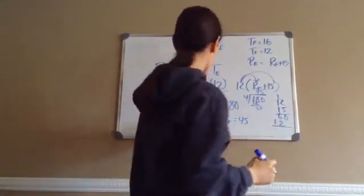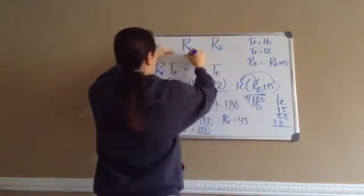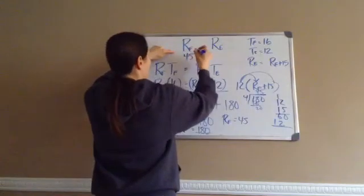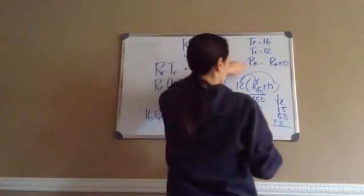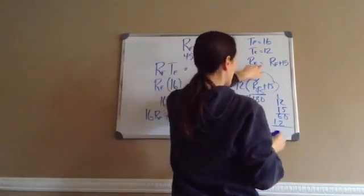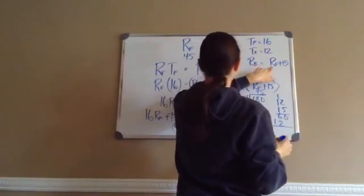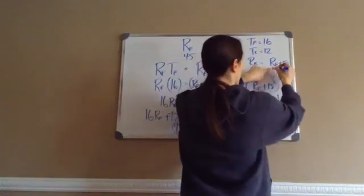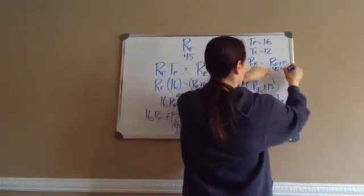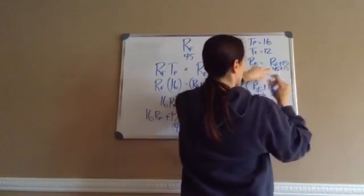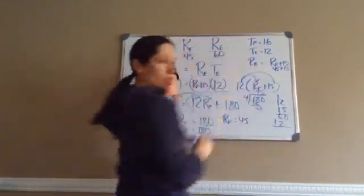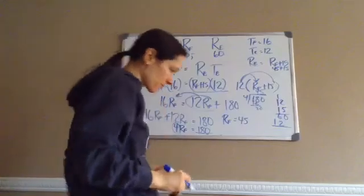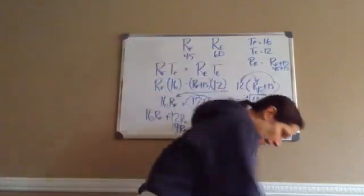RF equals 45. So if RF equals 45, then what does RE equal? Well, RE equals RF plus 15, which is 45 plus 15. So RE equals 60. That is Lesson 79.